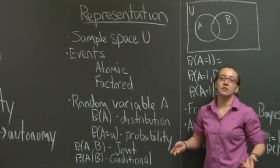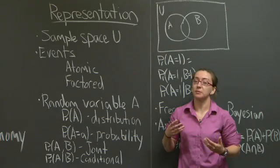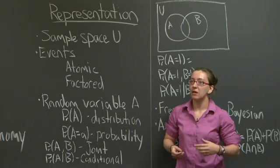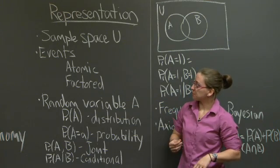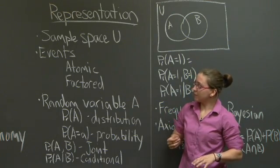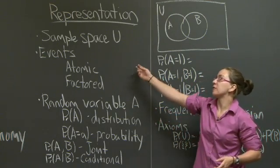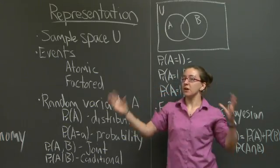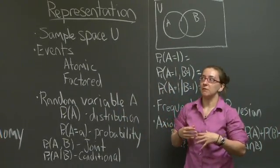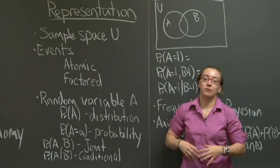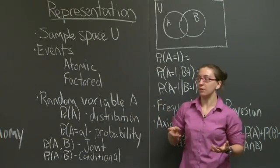The first thing I need to talk about is how to properly model probability, or how to properly talk about probability, such that we can use it to talk about uncertainty. When you're talking about probability, you'll typically end up talking about the sample space, or Ω. This refers to your entire universe, where your universe is the values that you care about, or the possible assigned values of the variables that you care about.